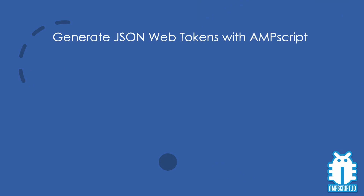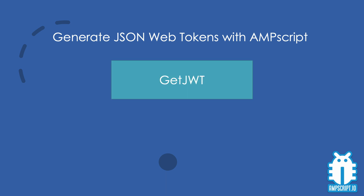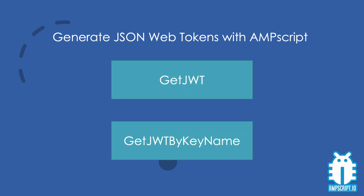The two new Ampscript functions that allow users to generate JSON Web Tokens are getJSONWebToken and getJSONWebTokenByKeyName. Both functions are available for messages and landing pages.